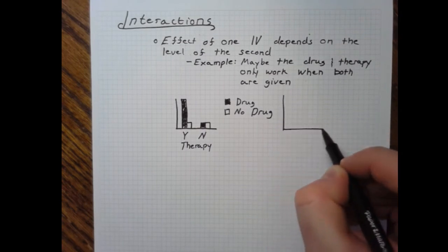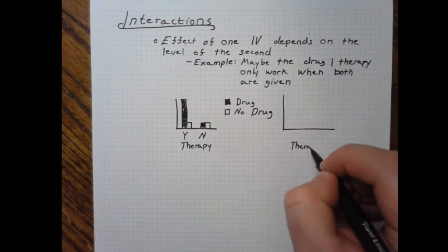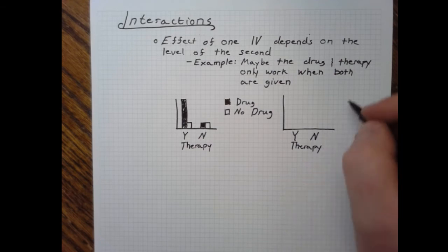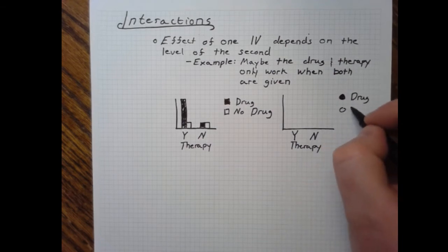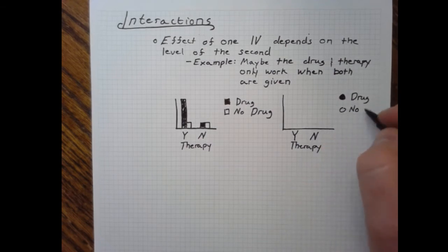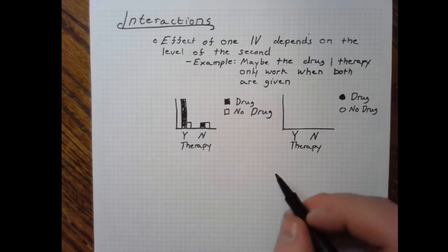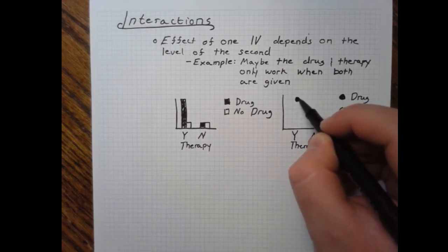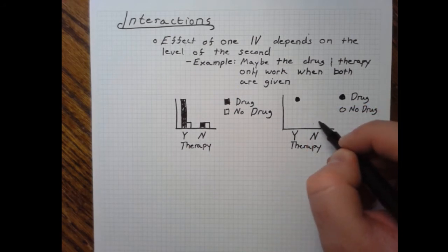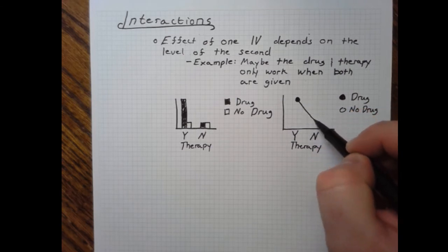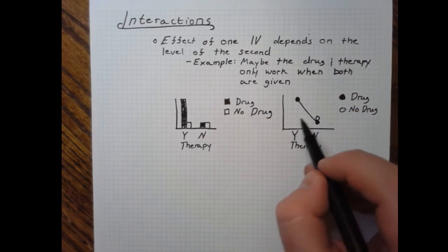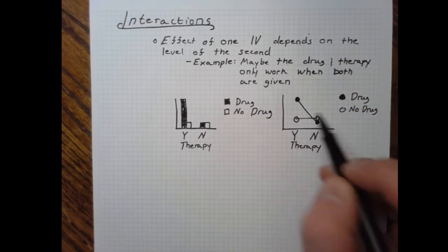You can also see this on a line graph. The key thing to note is that when there is an interaction, the lines are no longer parallel. We can see how the effect of one independent variable — in this case the drug — really seems to depend on whether or not you also got the therapy. If you got the no-drug condition, nothing's happening.